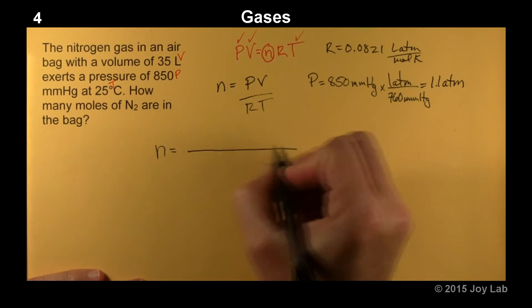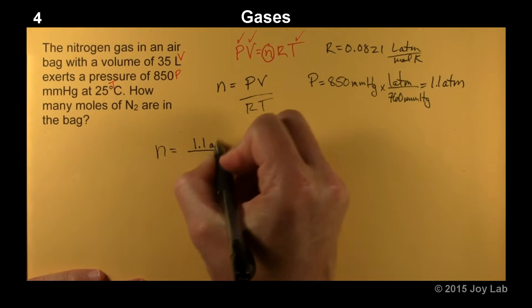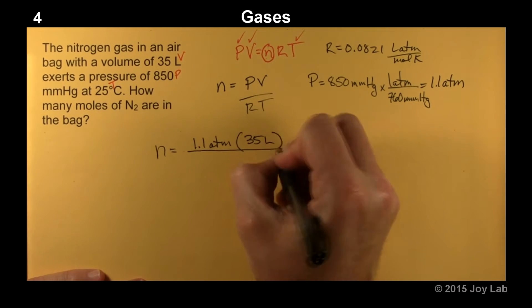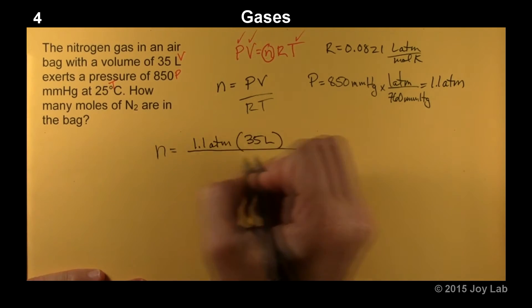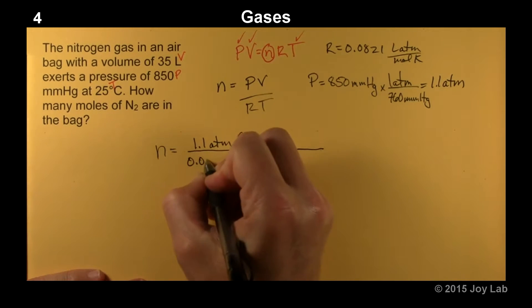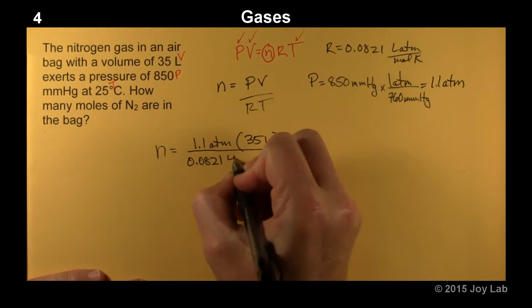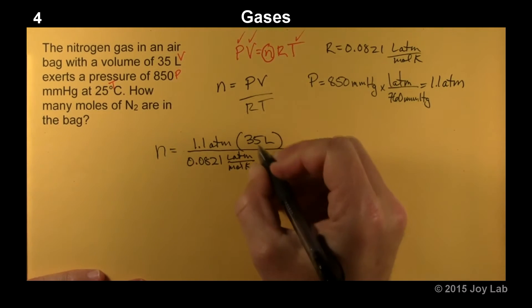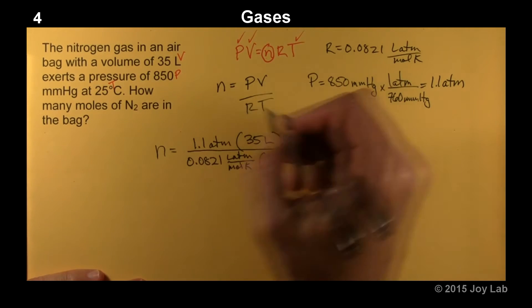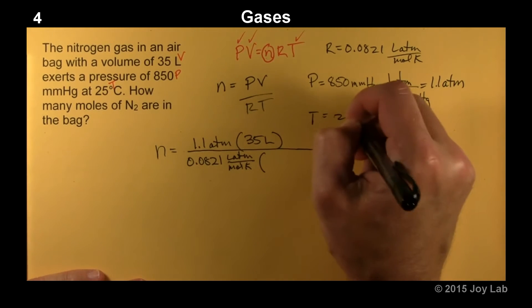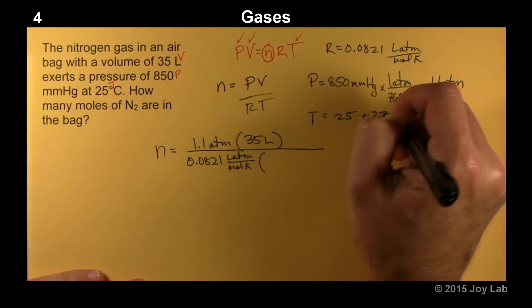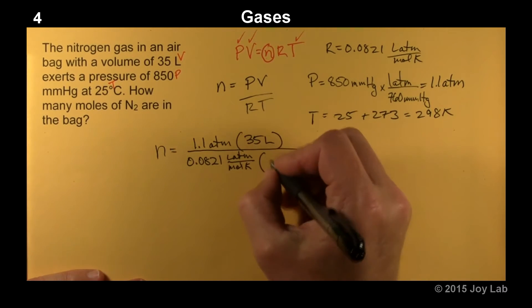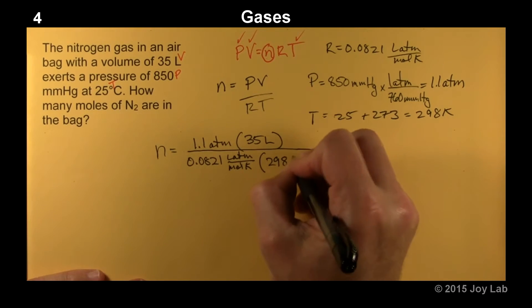So now we have 1.1 atmospheres times our volume, which is 35 liters, divided by 0.0821 liter atmospheres per mole K, times T, which is temperature is equal to 25 plus 273. We want to put it in kelvins. That's 298 kelvins. So I'll call it 298 kelvins.